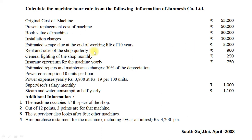Rent and rates of the shop: quarterly Rs 900, so annually it will be 900 multiplied by 4, that is Rs 3,600. The machine occupies one-fourth space of the shop, so 3,600 into 1/4 equals Rs 900 rent and rates for the machine. General lighting of the shop: monthly Rs 250, so annually it will be 250 multiplied by 12 months, that is Rs 3,000. As per additional information, out of 12 light points, 3 points are for that machine, so lighting for the machine equals 3,000 into 3/12, which is Rs 750.